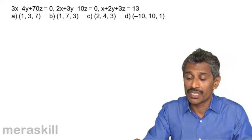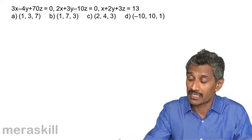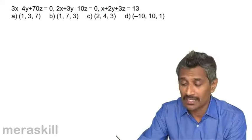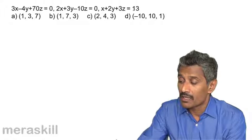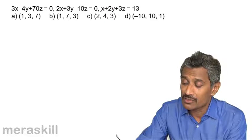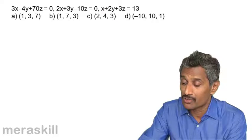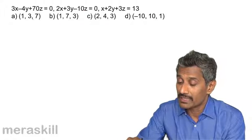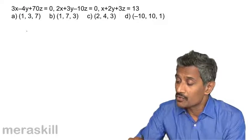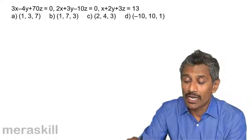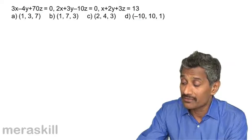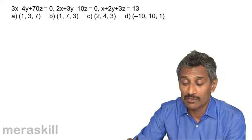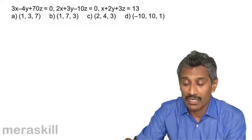Next, we have the system: 3x − 4y + 70z, 2x + 3y − 10z, and x + 2y + 3z = 13. Solving these by elimination could be very time-consuming, so we can preferably use the method of substitution. One of the equations has all three terms positive, and given the coefficient 70 on z, getting cancellation seems very unlikely for most combinations.